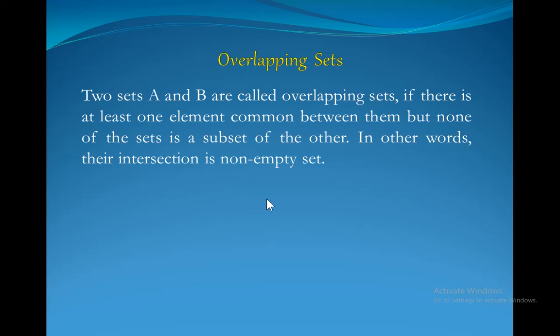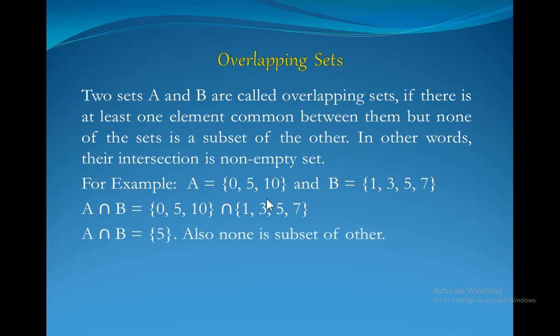Two sets A and B are called overlapping sets if there is at least one element common between them but none of the sets is a subset of the other. In other words, their intersection is non-empty set. For example, A is a set having elements 0, 5, 10 and B is a set having elements 1, 3, 5, 7. We see in their intersection A intersection B there is one element 5 common.